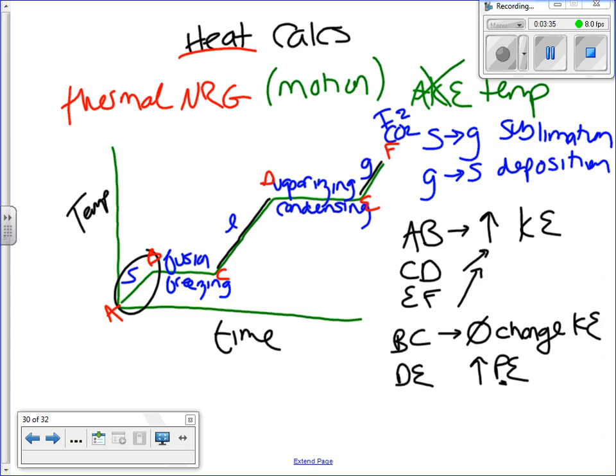Potential energy is a phase change at the plateau. If you don't know what a plateau is, it's a flat part. Those are the three Ps. So your plateaus are where the potential energy increases, and they're flat. That means the temperature is not changing, which means that the average kinetic energy is not changing.